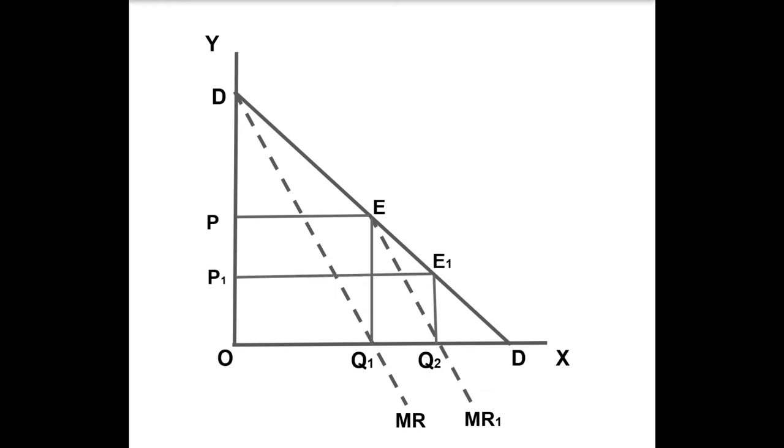The difference arises in the Chamberlin solution as compared to Cournot model from this point. In the Cournot model, each rival acts independently but Chamberlin assumes their interdependence.